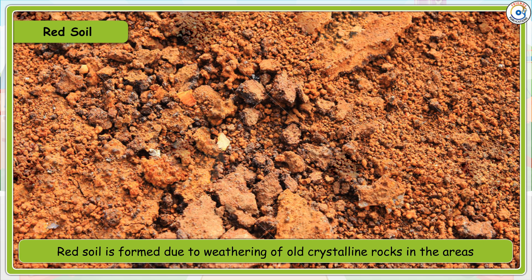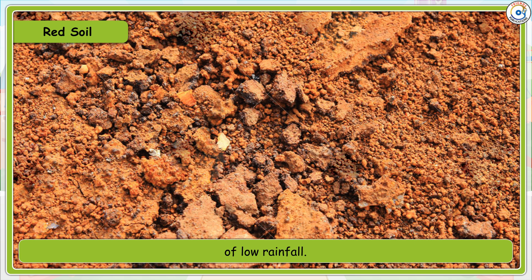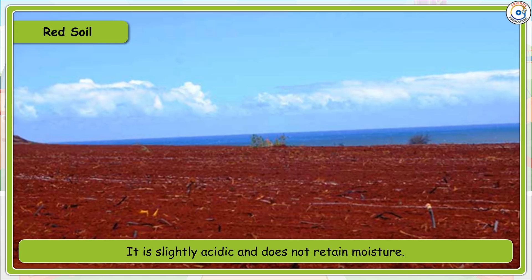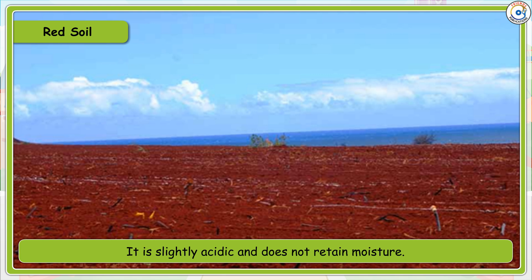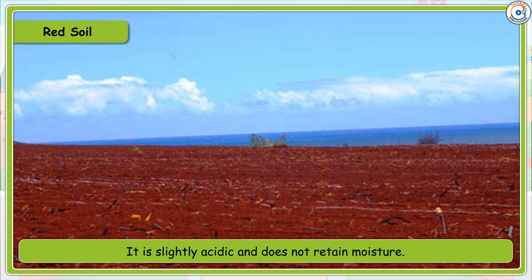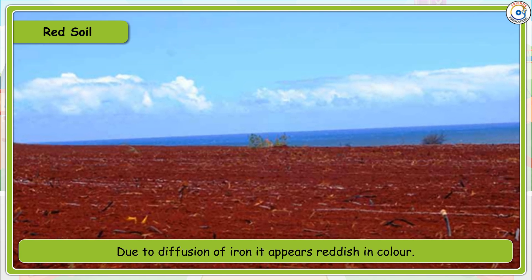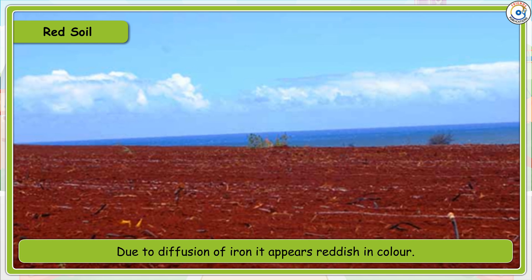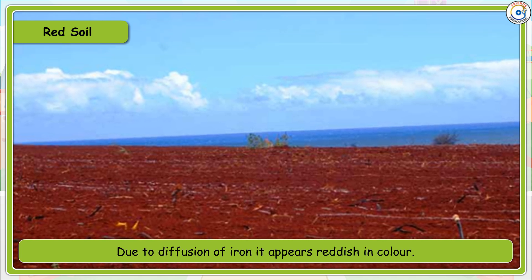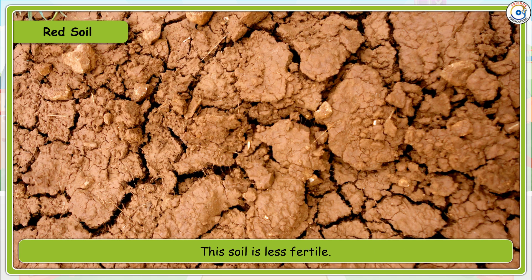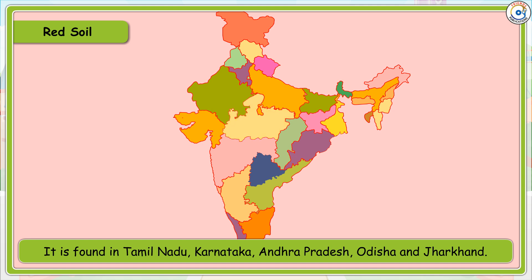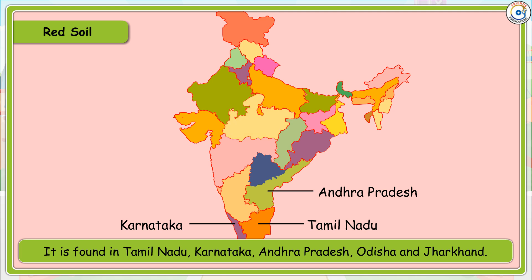Red soil is formed due to weathering of old crystalline rocks in areas of low rainfall. It is slightly acidic and does not retain moisture. Due to diffusion of iron, it appears reddish in color. The soil is less fertile and is found in Tamil Nadu, Karnataka, Andhra Pradesh, Orissa, and Jharkhand.